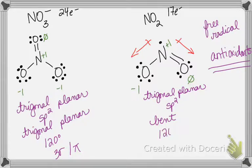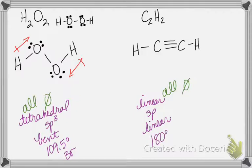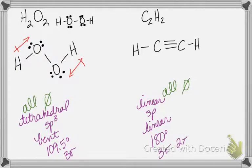Peroxide — 109.5 degrees, three sigma. The next molecule is 180 degrees. It doesn't matter which bond angle you're looking at on the peroxide — they're both 109.5. And on the next one, it's 180 and 180. As a whole, that molecule has three sigma and two pi bonds.